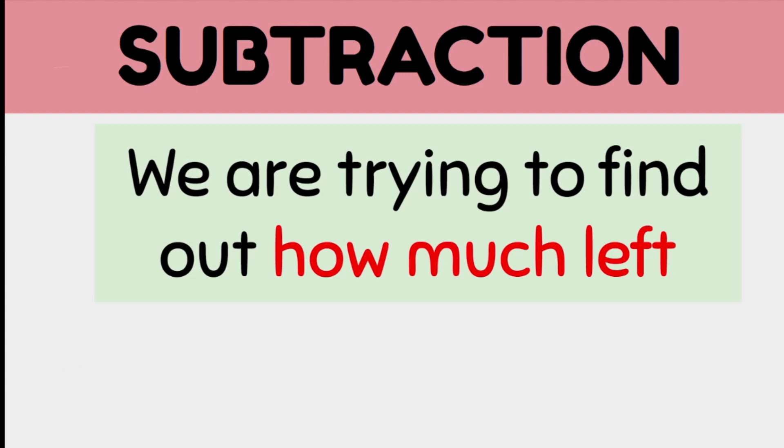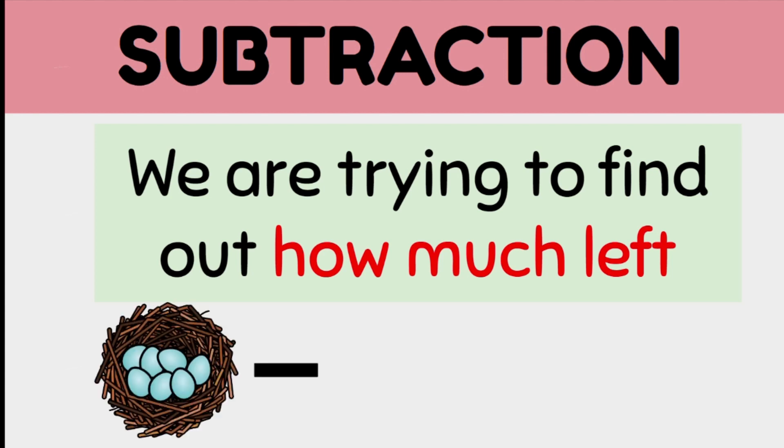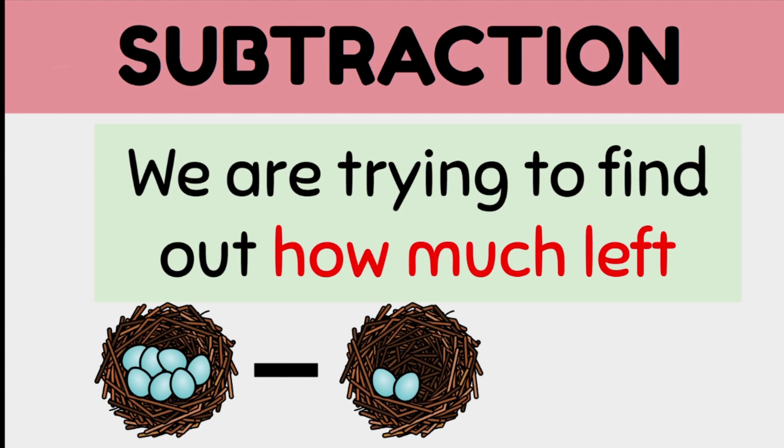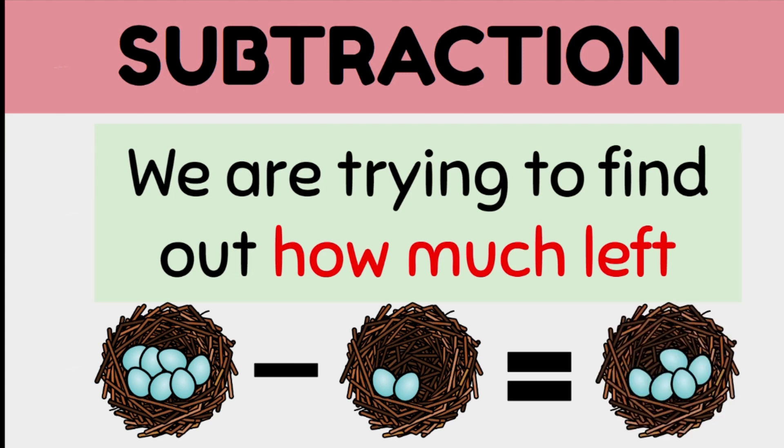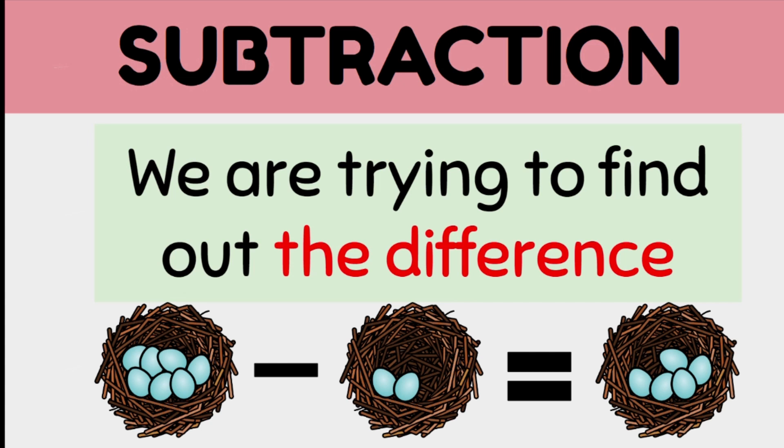On the other hand, subtraction, we know the total amount and we're trying to find out how much is left after we take some away. For example, we have seven eggs in the nest and we take two eggs away, which leaves us with five eggs. The answer in subtraction is what we call the difference. This is how much is left.